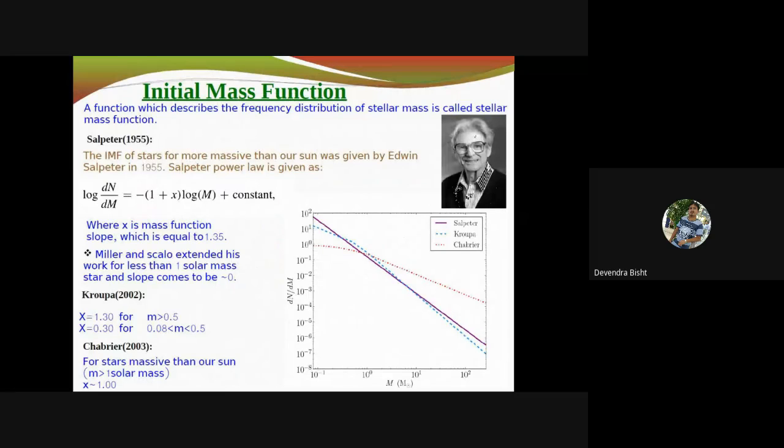The initial mass function. The mass function is very important to understand star formation and stellar evolution history. A function which describes the frequency distribution of stellar mass is called the stellar mass function. You can see this is the Salpeter power law. Salpeter had first quantified and well established the power law for stars heavier than one solar mass. This is the power law where X is the mass function slope and dN is the number of stars in a particular mass bin dM. He found the mass function slope is around 1.35. Miller and Scalo extended his work for less than one solar mass and they found the slope is around zero. After that, many astronomers came into action. Kroupa in 2002 distributed the cluster region into two different masses: higher than 0.5 solar mass and below 0.5 solar mass. They found above 0.5 solar mass, the power law strictly followed Salpeter's rule, and below that they found some greater mass function slope.